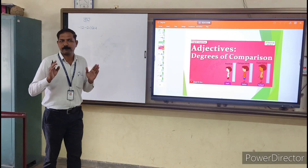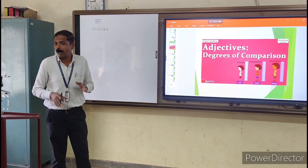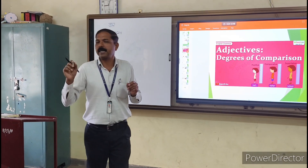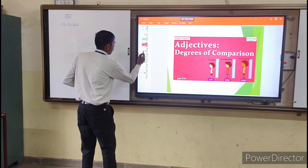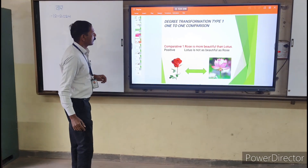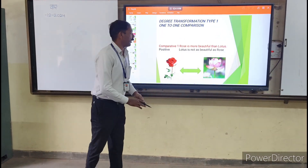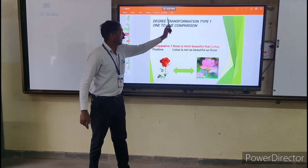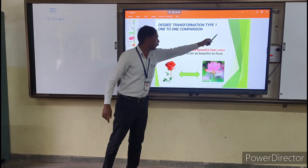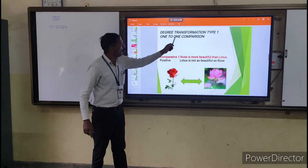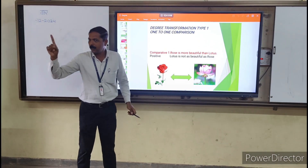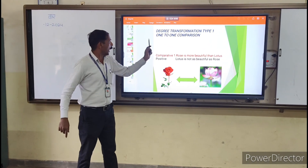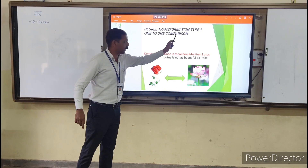We will now study degree transformation in sentences — how we change degree in a sentence. Degree transformation Type 1: one-to-one comparison. The first type is a one-to-one comparison.